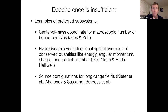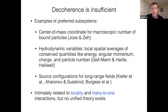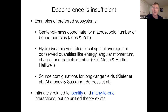A third example is source configurations for long-range fields. We don't seem to find a lot of superpositions of macroscopic electromagnetic fields — they're very delicate and they decohere. Likewise the gravitational field: we would love to see superpositions of the gravitational field, but again these decohere very quickly. Those seem to be preferred degrees of freedom. It has been noticed and commented on many times that what these have in common is their relation to locality — the locality of interactions where Hamiltonians couple things that are nearby — and a many-to-one nature where the preferred degree of freedom's environment has many parts that all talk to it but not as much to each other. Although this has been noticed, there's no unified theory of it.